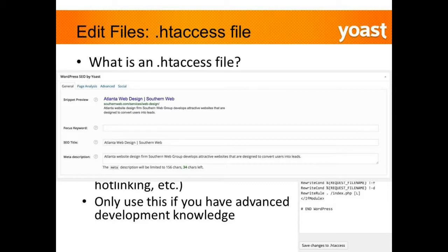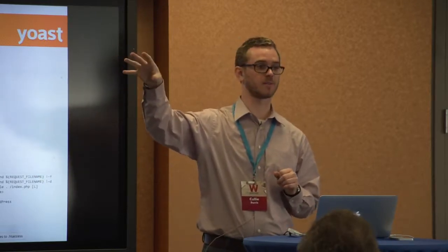The htaccess file allows you to do things like implement 301 redirects and other advanced development features — typically leave this to your developer. You can implement 301 redirects on the actual on-page editor. You can also do things like prevent hotlinking, where someone links to an image on your server and uses it on their site — affecting your bandwidth and resources to load an image that isn't theirs. Again, this is an advanced feature; leave it to your developer.